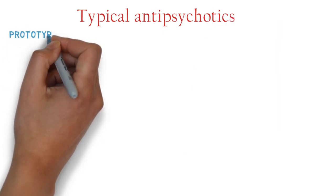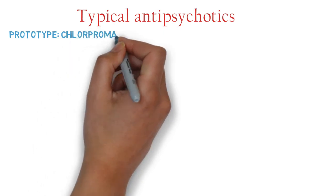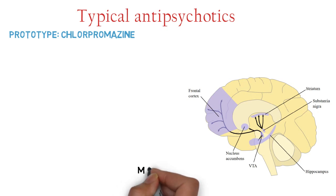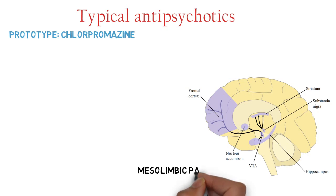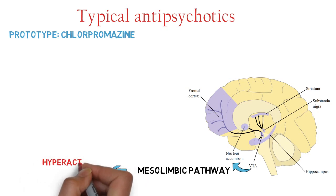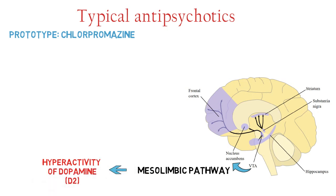Defining the mechanism of typical antipsychotics: dopamine acts through several different pathways in the brain. The pathway important in psychosis is the mesolimbic pathway, which originates from the VTA and terminates in the nucleus accumbens. Through this pathway, dopamine regulates mood and emotion. Hyperactivity of dopamine in this pathway via D2 receptors results in positive symptoms.